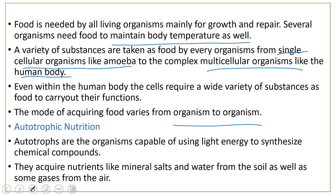Autotrophic nutrition means the organism prepares its own food, depending on inorganic substances like carbon dioxide, water, sunlight, and chlorophyll. Such nutrition is called autotrophic mode of nutrition. Heterotrophic nutrition means organisms depend on plants and other animals for their nutrition. Such organisms are termed as heterotrophs, and this is called heterotrophic mode of nutrition. In this class we are discussing about autotrophic nutrition.